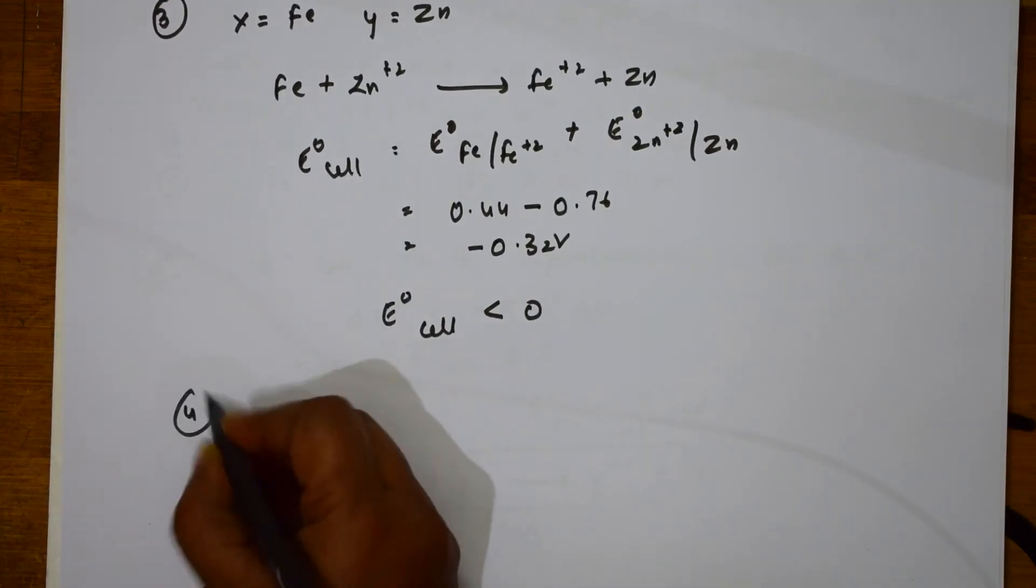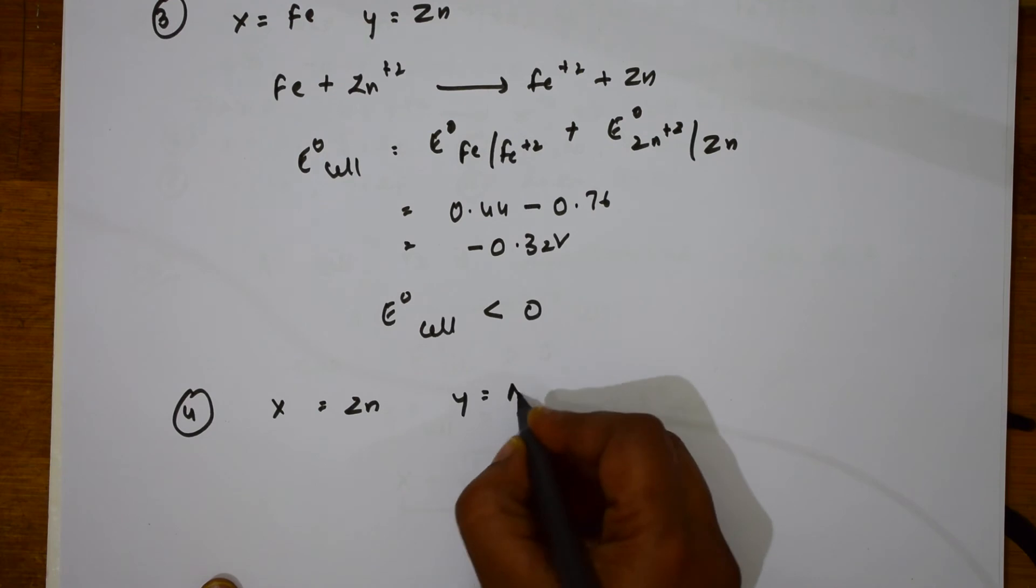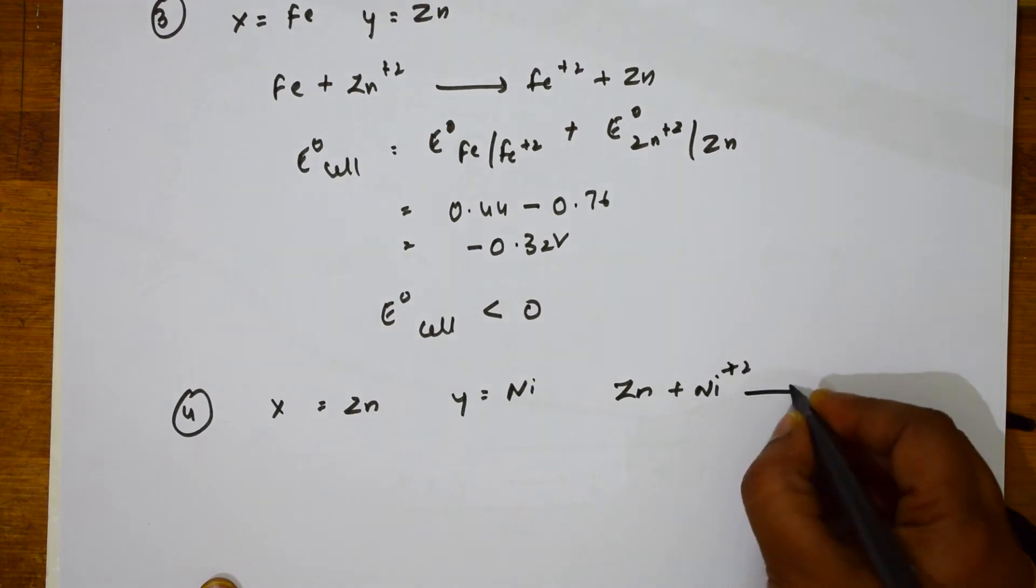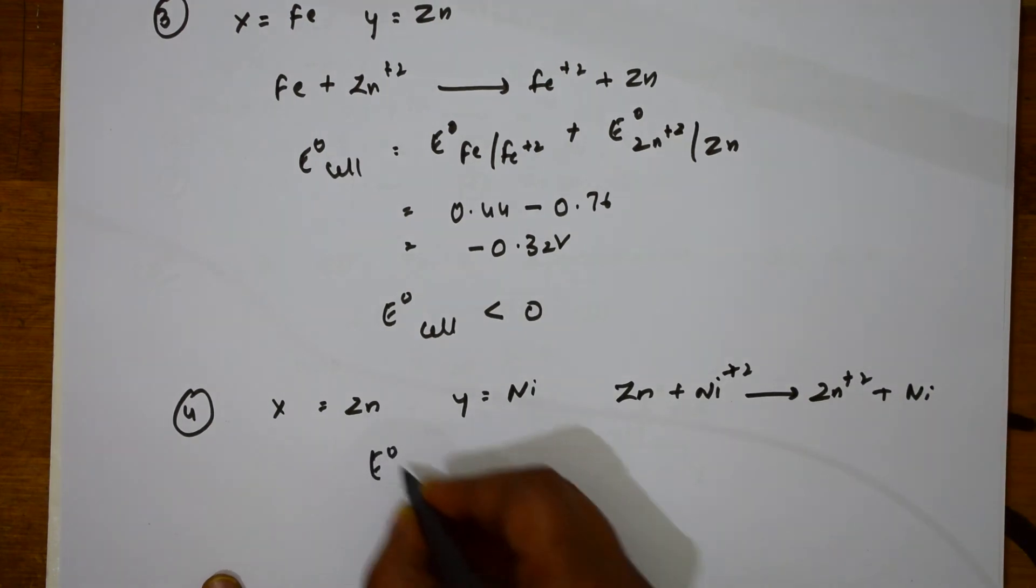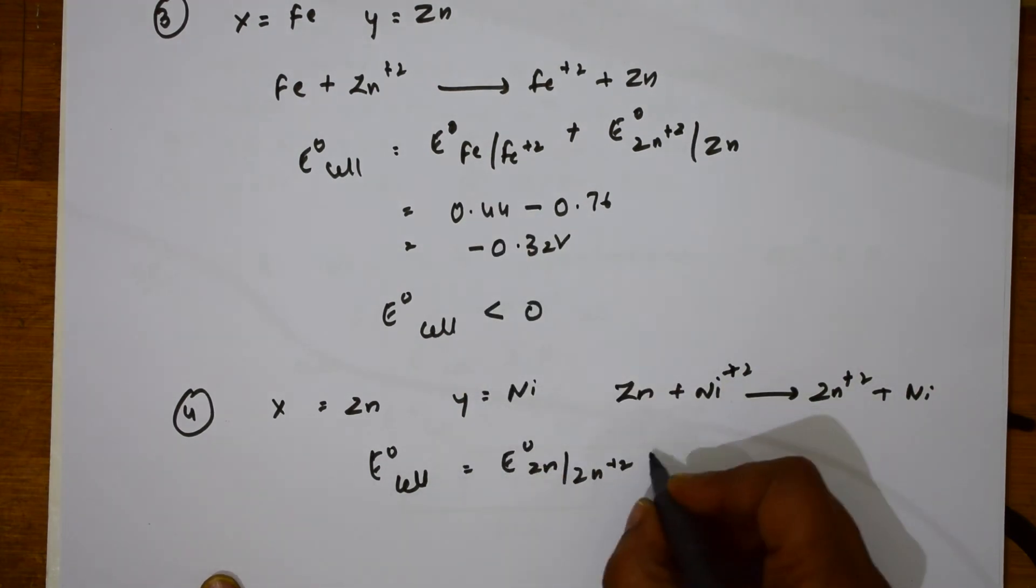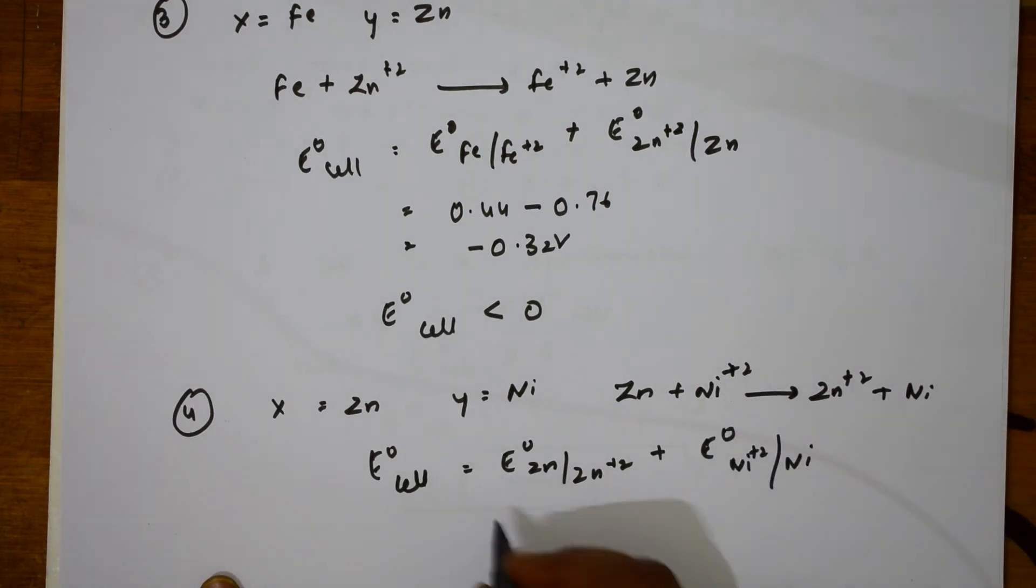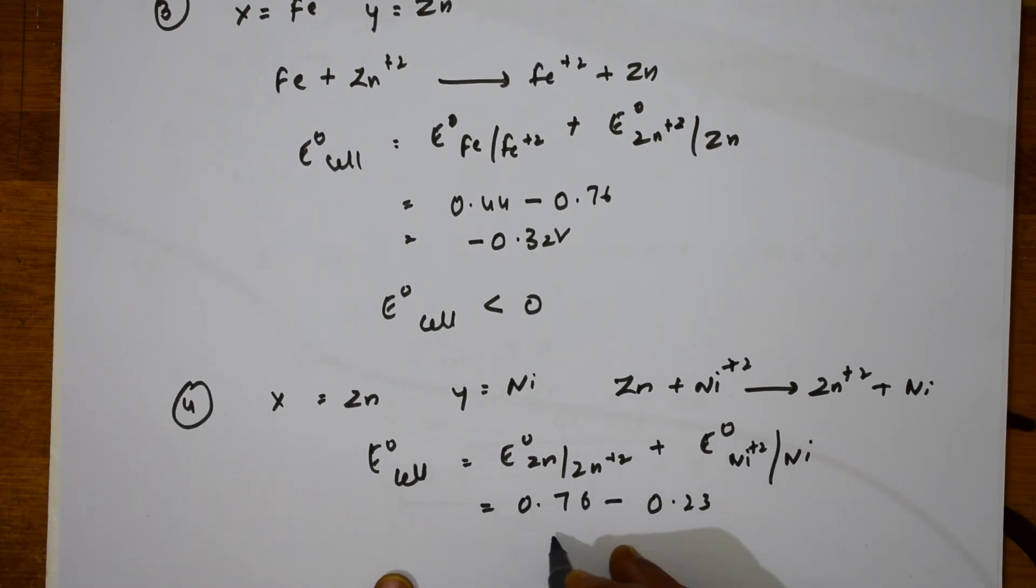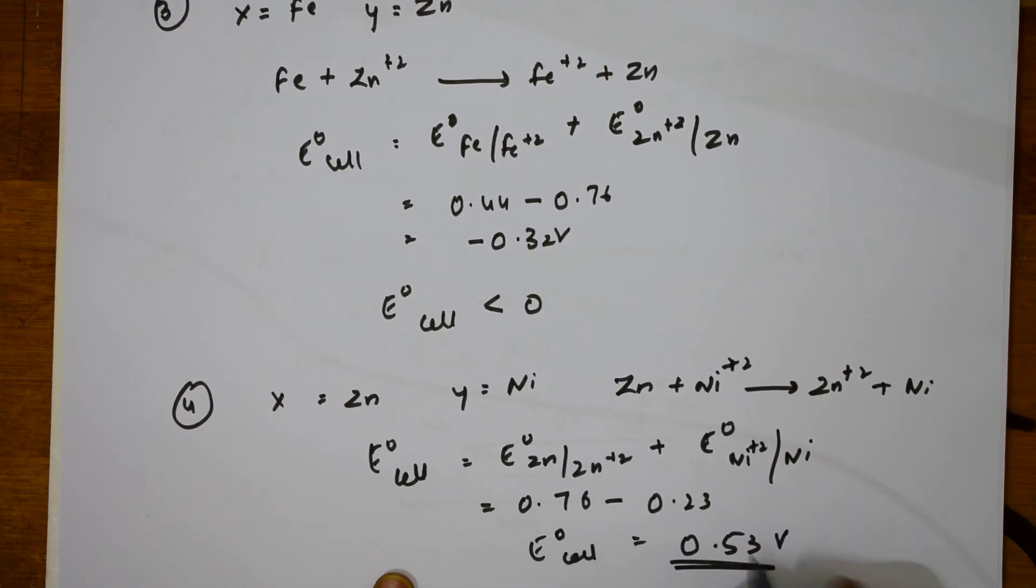Let me solve the fourth one. Fourth option, X = Zn, Y = Ni. Again, write the cell reaction. Zn + Ni²⁺ gives us Zn²⁺, which undergoes oxidation, then comes Ni. E naught cell is equal to E naught Zn/Zn²⁺, same thing. E naught by Ni²⁺/Ni. How much do I get? 0.76 minus 0.23. When I solve this, I get an answer of E naught cell is equal to plus 0.53 volts.